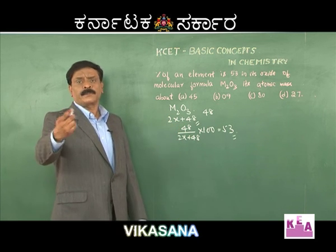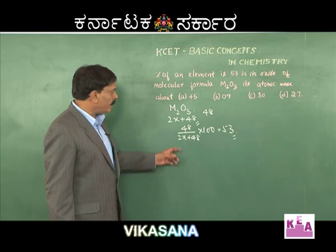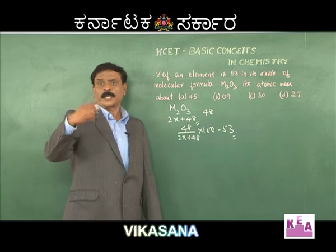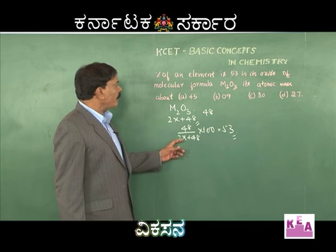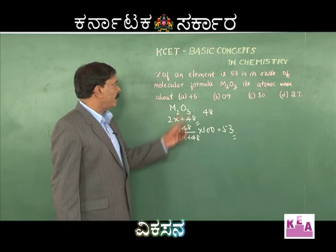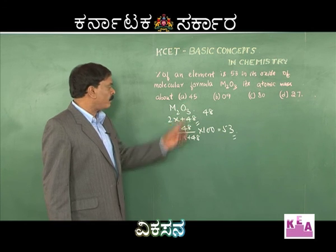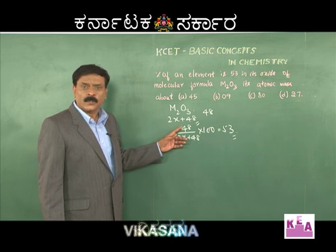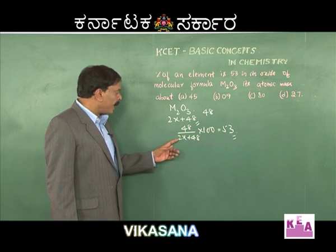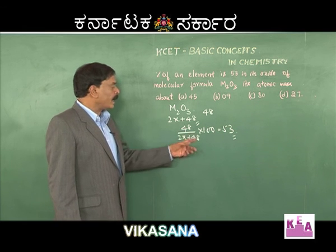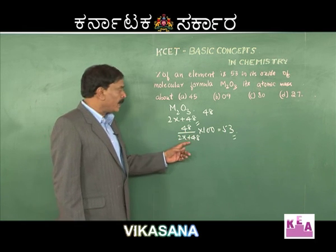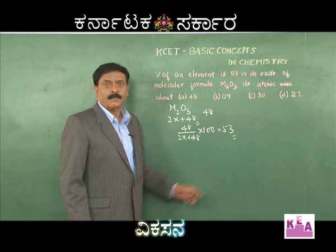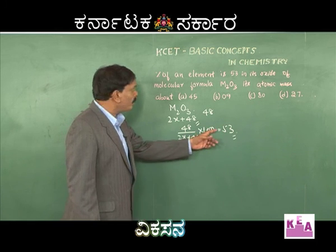One method is to simplify this algebraically, or you can use a shortcut: substitute the values of x from the options. If I substitute x as 45, this turns out to be 48 by 138, which is nearly one third, giving about 33 percent — but we want 53.